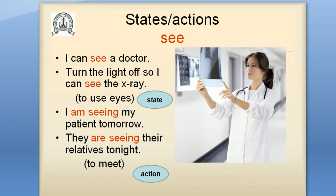Verb: see. When it comes with the meaning 'meet,' it's an action. When it gives the meaning of using eyes, it's a state. For example: 'Turn the light off so I can see the x-ray' — here I use my eyes, so it's a state verb. 'I'm meeting my patient tomorrow' / 'They are seeing their relatives tonight' — here it gives the meaning 'meet,' so it's an action verb.